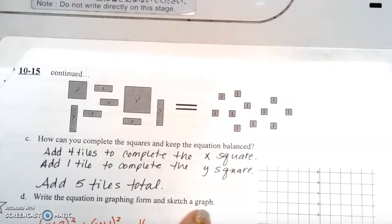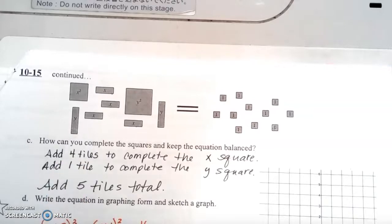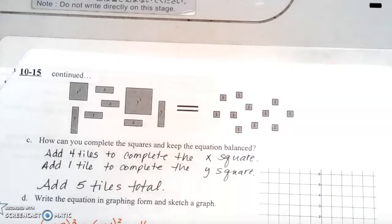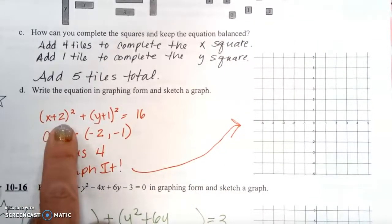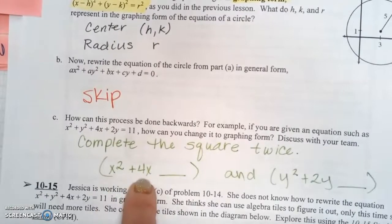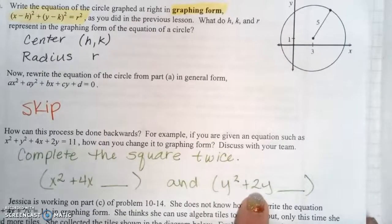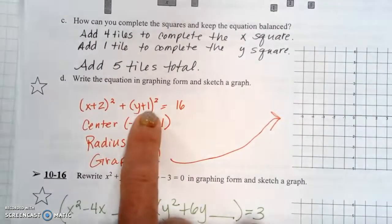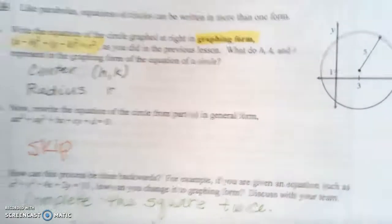So part D, write the equation in graphing form and sketch a graph. So if we're going to write the equation in graphing form, we need to write it with whatever half of the original number where we were completing the squares. So if we have the x² + 4x, we have to take half of the 4, which is 2. So that becomes our perfect square right here. And we have to take half of the 2y that was here, so that would be 1. And that becomes our completing the square here. If we added the 5 tiles total, we have to add the 5 back to this 11. So 11 + 5 would get us our 16.